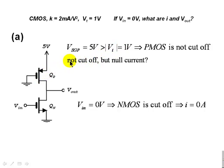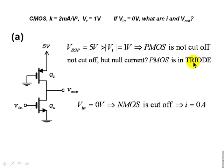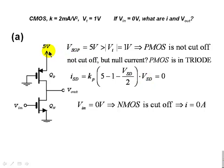But wait — the P transistor is not cut-off, yet the current is zero. What is the mode of operation of the P transistor? It has to be in triode mode. That is the only possible conclusion: it's not cut-off, but the current is zero, so it's in triode mode. We know the triode formula for current, which depends on the source-drain voltage. We use that formula — setting current to zero — to determine VSD, and the only possibility for the triode transistor to have null current is for VSD to be zero.